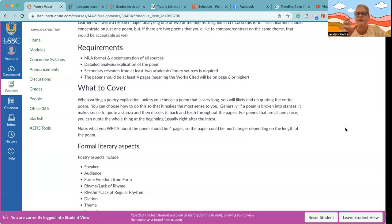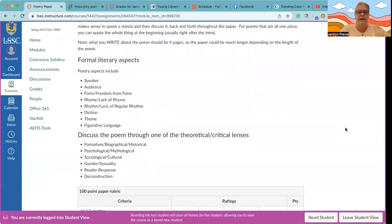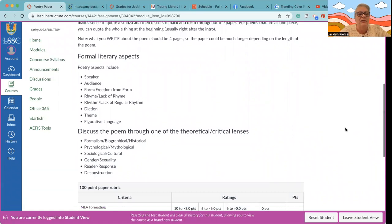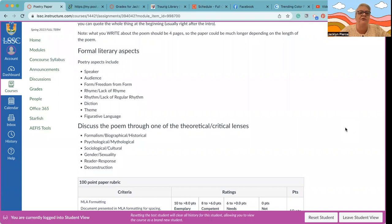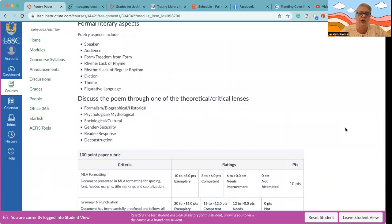What you write about the poem should be four pages. So, like I said, this paper might be much longer. Note about citing poetry: when you cite a poem, what goes inside the parenthetical citation, in addition to the author if needed, is line numbers instead of page numbers. So you definitely need to utilize the line numbers as you are quoting lines or even phrases or words from the poems. Poetry aspects include speaker, audience, form and freedom from form, rhyme or lack of rhyme, rhythm or lack of regular rhythm, diction, theme, and figurative language.